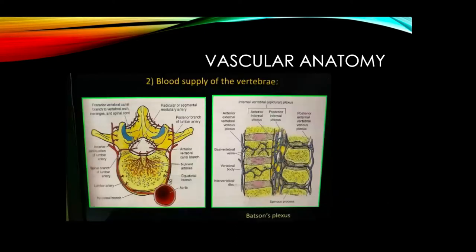The arterial supply reaches the end plate but doesn't cross into the disc. In children, there are still vascular channels, so infection in the vertebral body can go directly into the disc — which is avascular in adults — and cause discitis. In adults, discitis via this route tends not to be as common. The other theory involves Batson's plexus — whether infection can travel via this venous plexus from an alternative source in the body.